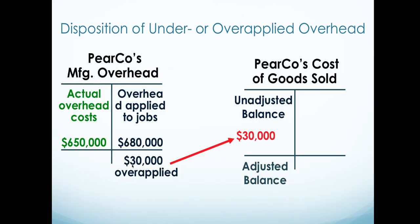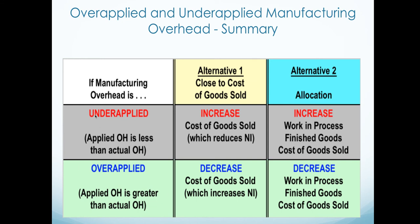In the case where the overhead was over-applied, meaning we applied too much manufacturing overhead, we simply adjust by taking it out of cost of goods sold. If manufacturing overhead was under-applied — meaning applied overhead is less than actual — we need to apply more overhead by increasing cost of goods sold, which will reduce net income. More expenses means less net income. On the other hand, if overhead was over-applied, we decrease cost of goods sold, which increases net income.